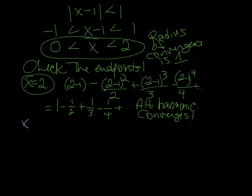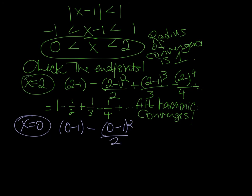It's not enough to check one endpoint; we have to check the other too. Let's check x equals 0. When x equals 0, the series becomes 0 minus 1, minus 0 minus 1 squared over 2, plus 0 minus 1 cubed over 3, minus 0 minus 1 to the 4th over 4, and so on.